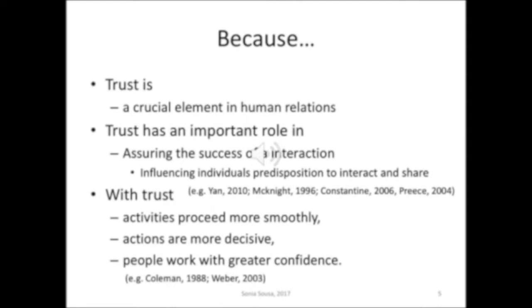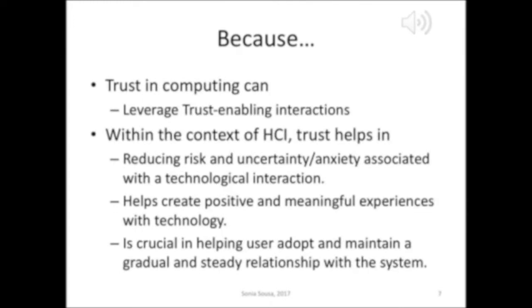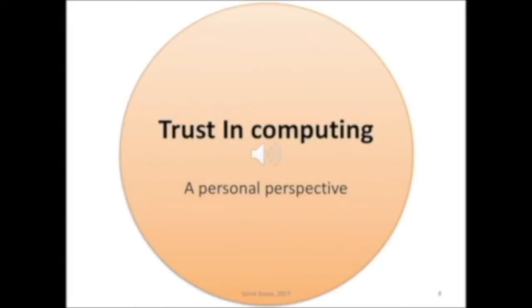Trust is the crucial element in human relations. It is important because it ensures that interactions will succeed, and it ensures that individuals are prepared to interact and share. With trust, the activities can proceed more smoothly and actions are more distributed, and people work with greater confidence. Trusting opens the level of commitment and reduces the level of uncertainty, because trusting is a fundamental condition for influencing concerted social action, participation, and liberation. Trusting in computing is about leveraging trustable interactions. In human-computer interaction, trust helps to reduce the risk of uncertainty related with technology. It also helps create positive and meaningful experiences when using technology, and is crucial for helping users produce certain activities or artifacts.